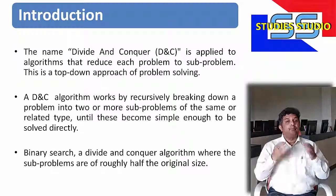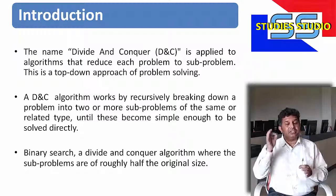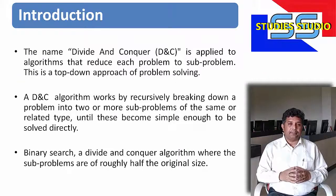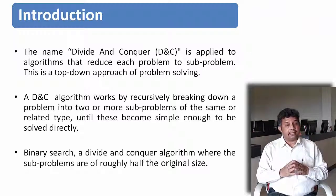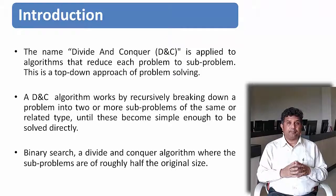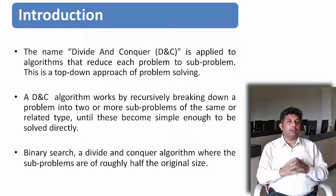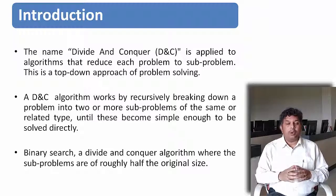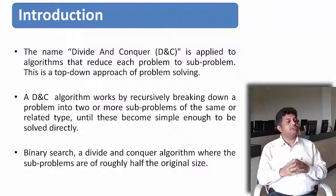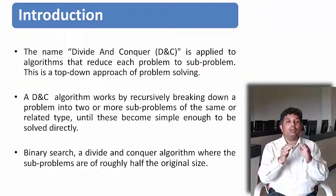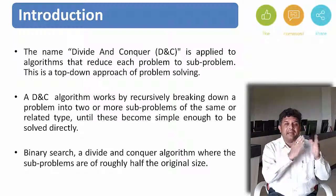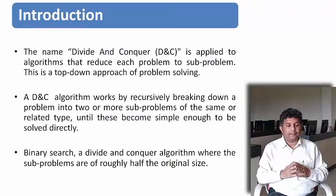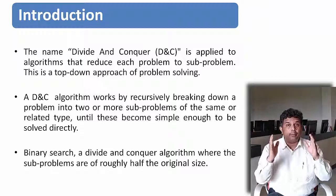For example, let us take binary search — it is the best example for divide and conquer. In binary search we are given sorted data either in ascending or descending order, and we want to search a particular element. What we do is try to find the mid value and compare it with the searched value. Depending on whether the mid value is greater than or less than the searched value, we discard either the left-hand side or right-hand side.